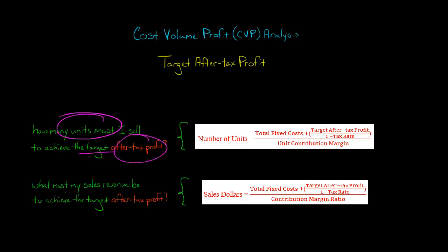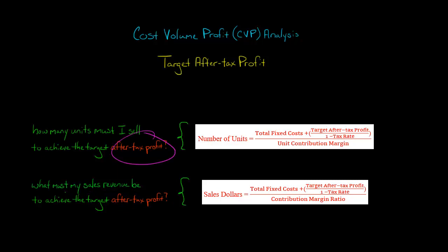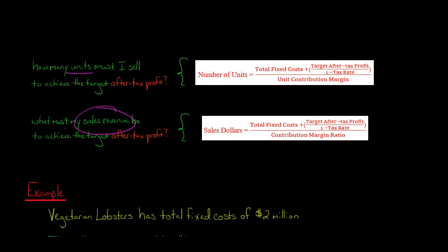Let's say the after-tax profit is $400,000 — once you put in the numbers, it will tell you how many units you need to sell to get that after-tax profit. I'm also going to show you a related formula that tells you what your sales revenue needs to be — how many sales dollars you need in order to reach the after-tax profit. I'm going to apply both formulas with an example.